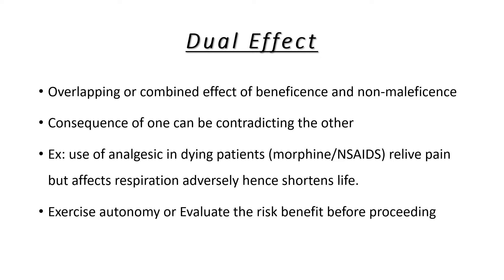Dual effect refers to the overlapping or combined effect of beneficence and non-maleficence, where the consequence of one can contradict the other. For example, use of analgesics in dying patients — like morphine and NSAIDs — relieves pain but affects respiration adversely, hence shortening life. So beneficence is causing non-maleficence. Many of such decisions are overlapping and contradicting, so we need to evaluate the risk before proceeding with such procedures.